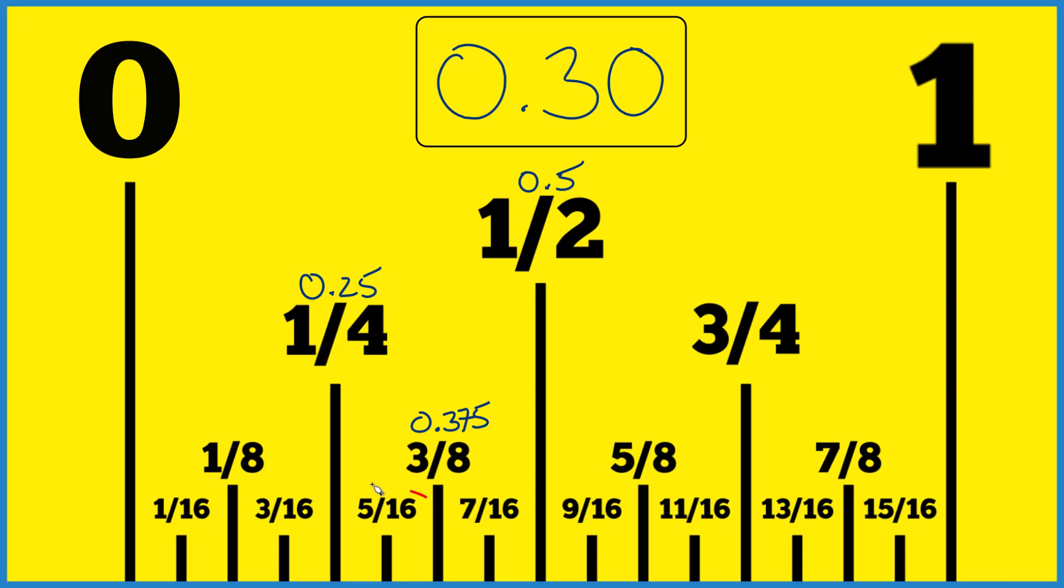So now we know we're somewhere in here. It looks like we're going to be close to 5 sixteenths of an inch. So let's just divide 5 by 16. And that ends up being 0.3125. That's our 5 sixteenths.